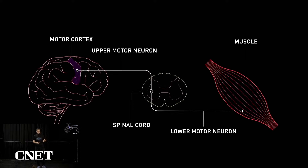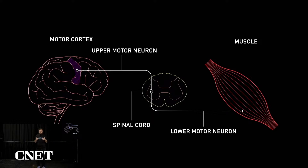First, a little neuroanatomy. Movement intentions arise in motor cortex and are sent down long nerve fibers through the spinal cord — these are upper motor neurons. In the spinal cord, they synapse, that is, make a connection with another motor neuron, a lower motor neuron, which sends these movement intentions to the muscles, which contract, and in turn you have movement.